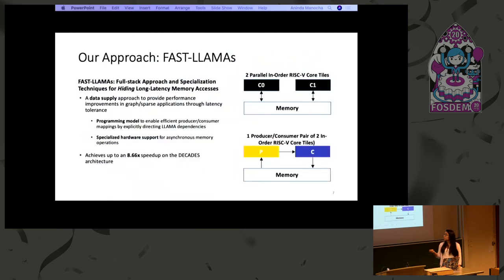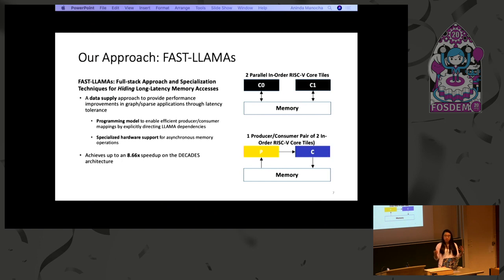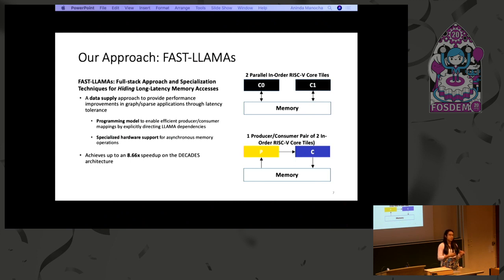Because LLAMAs have a disproportionately large impact on the performance of these graph applications, our work seeks to specifically address them. We introduce our approach: FastLLAMAs, short for Full Stack Approach and Specialization Techniques for Hiding Long Latency Memory Accesses. At a high level, this is a data-supply approach that efficiently maps graph applications onto pairs of producer and consumer cores. We have a programming model for more explicit mapping and specialized hardware support that can asynchronously issue irregular memory accesses, and we do get impressive speedups from this.